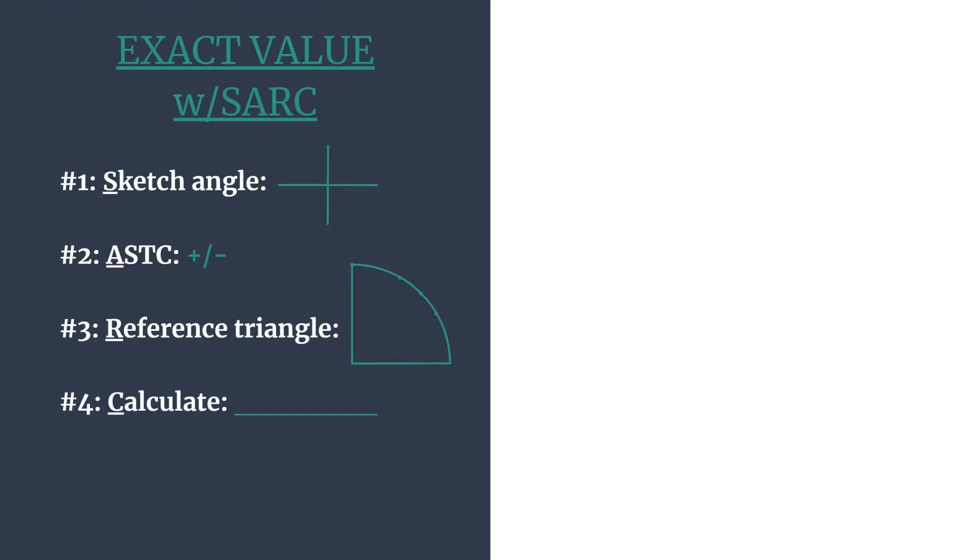So here's the method outline. We first sketch the angle, that's the S. The A helps you think of ASTC which will help you decide the sign of your final answer. The R stands for reference triangle and angle so that you can find the correct coordinates to work with, and then the C is for calculate. You'll calculate your trig ratio.